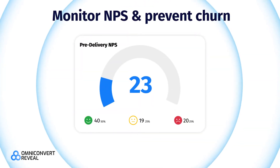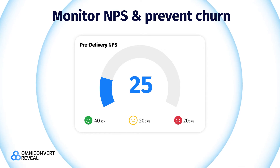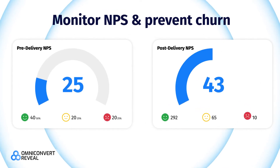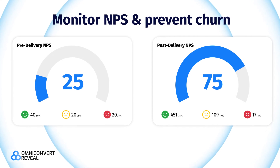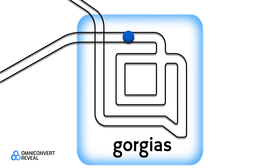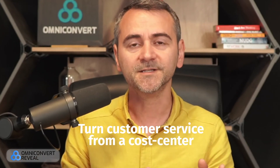Monitor the Net Promoter Score and prevent churn. You can find out how happy your customers are at two crucial moments: before they get their products and after they receive them. Fix the problems of the unhappy ones in real-time thanks to our integration with Gorgias and other helpdesk solutions. Turn customer service from a cost center into a profit center and become a proactive problem solver.